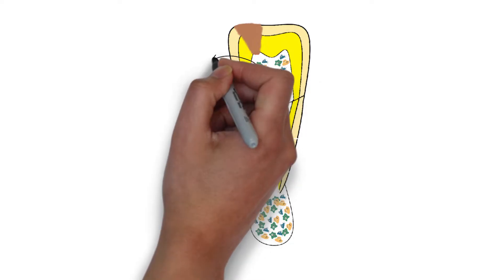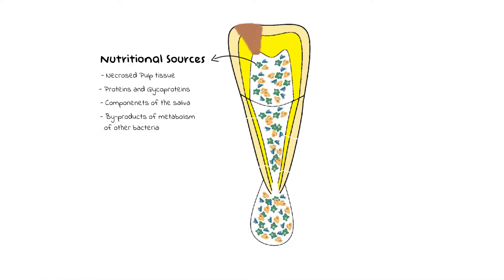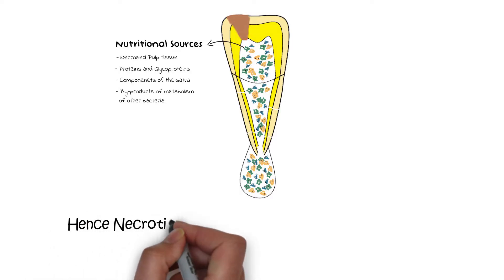Nutrients for further bacterial division come from various sources. There are four important nutrients bacteria feed on once inside the pulp: the necrotic pulp tissue itself, the proteins and glycoproteins available along with the necrosed pulp, components of saliva — which are easily available as the pulp has already been exposed to the oral cavity environment — and finally, the byproducts of metabolism of other bacteria.